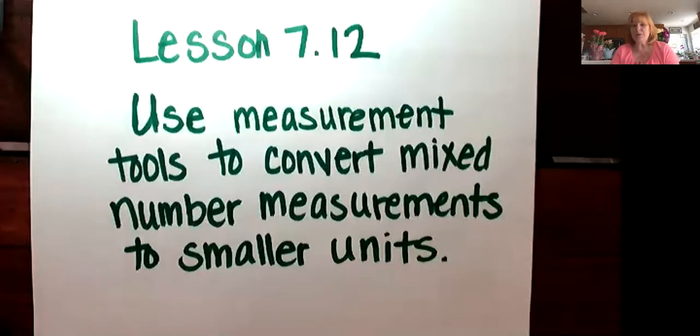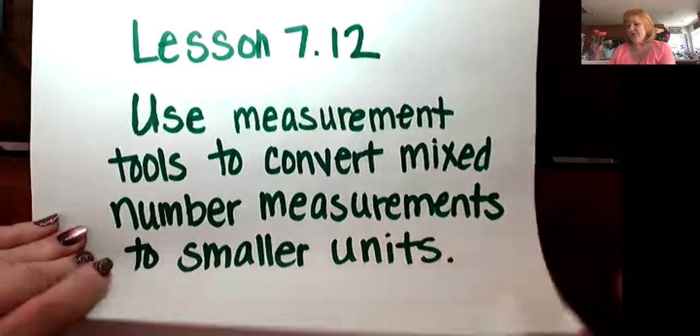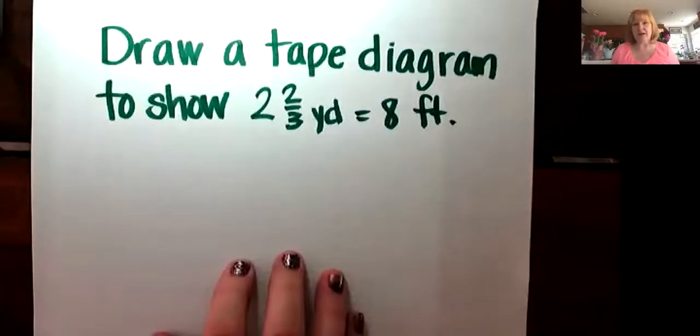Okay, fourth grade. Now we're on module 7, lesson 12, and we're going to take a little bit of a departure from the multiple-step word problems that we've been working on, but we're still going to hang in there with conversions. Only this time, we're going to be looking at how measurement tools convert mixed-number measurements to smaller measurements. So we're going to be starting with larger measurements. Here's an example of the types of problems that we're going to be working on today.